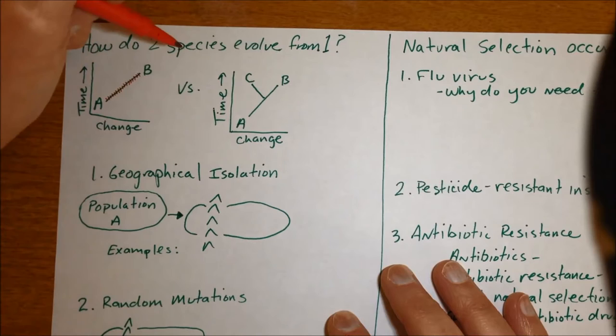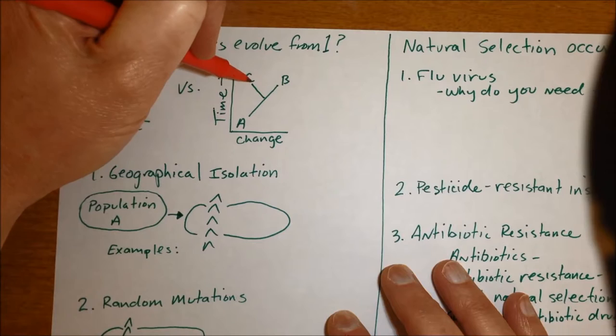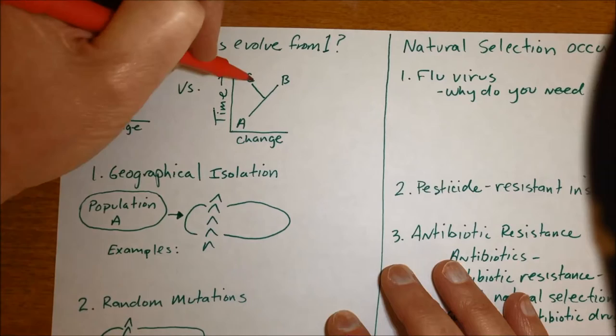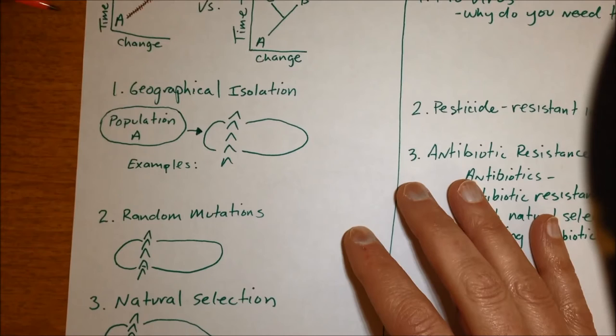But the question of the day was how do you ever get new species? How can species A turn into species C and B? So increasing the number of species on the planet because without understanding this all we have is one species changing into two.